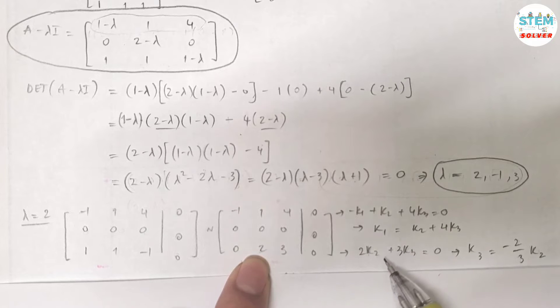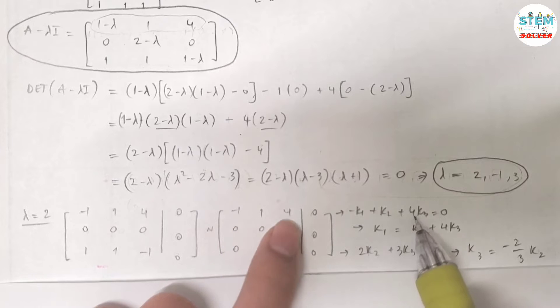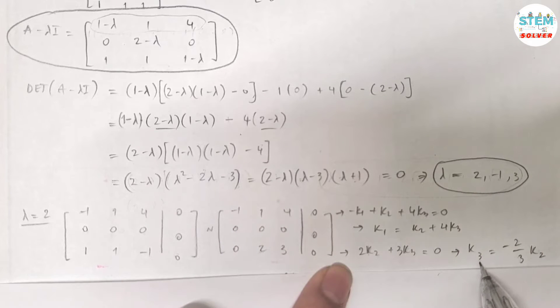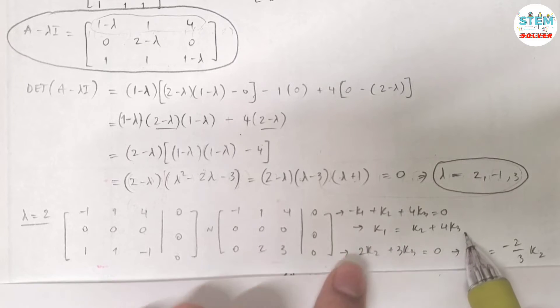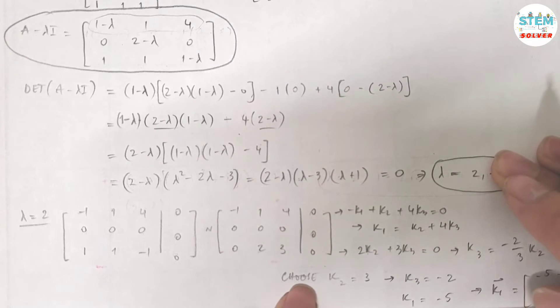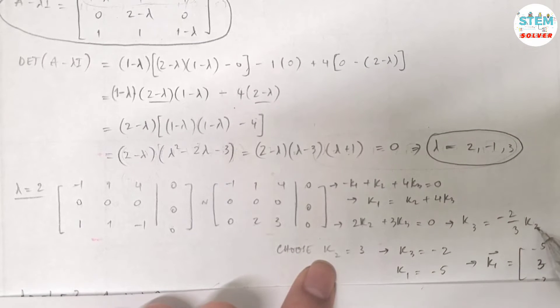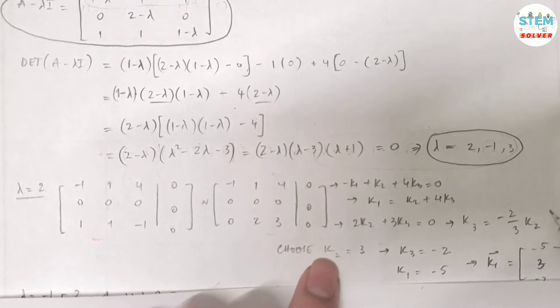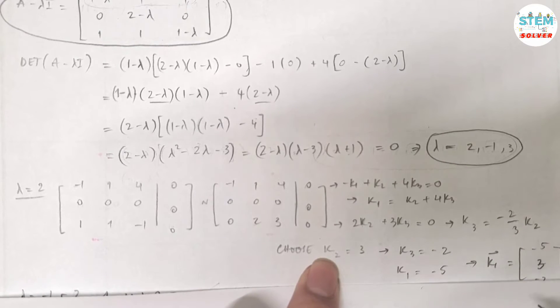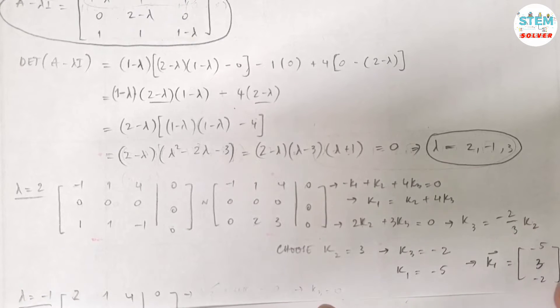From the first equation I have -k₁ + k₂ + 4k₃ equals 0, and since I have k₃, I solve for k₁ which is k₂ + 4k₃. Now if I choose k₂ equals 3, then k₃ equals -2, k₁ equals -5. You can choose whatever value for k₂ as long as it's not 0. Then my vector k₁ is [-5, 3, -2].